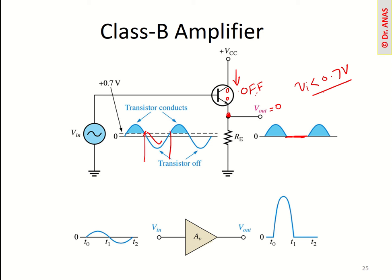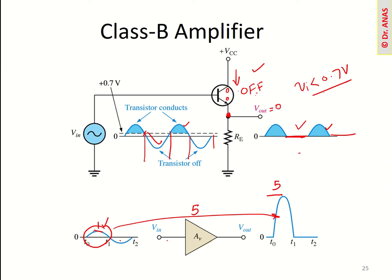For the negative cycle the transistor is off, then for the next positive cycle we get output again, then off again for the negative cycle. So with one transistor that is our output — only the positive cycles. If this is acting as an amplifier with a gain of, say, 5 and the input amplitude is 1, the output is multiplied by 5 but we only get the positive cycle; for the negative cycle the amplifier is off and output is zero.